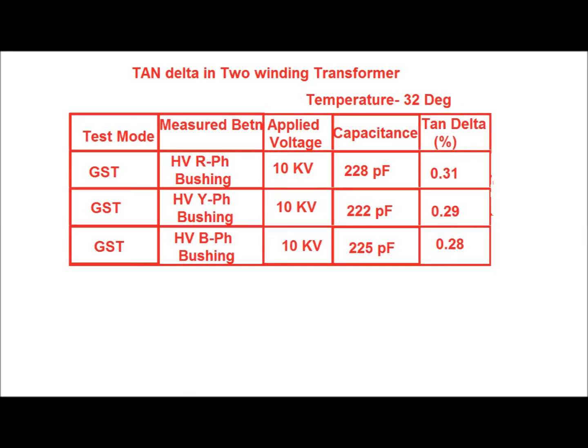Bushing tan delta is measured in GST mode for HV red phase, Y phase, and B phase bushing. Tan delta values are 0.31%, 0.29%, and 0.28% respectively, and capacitance values are 228 picofarads, 222 picofarads, and 225 picofarads respectively. The applied voltage is 10 kV and temperature is 32 degrees.